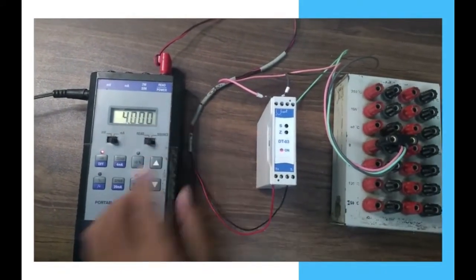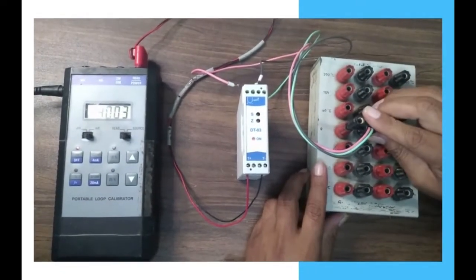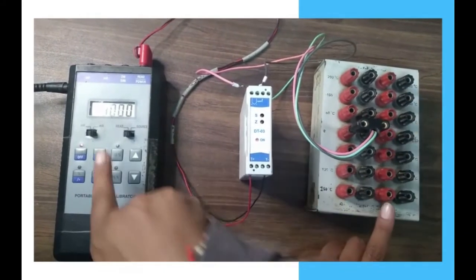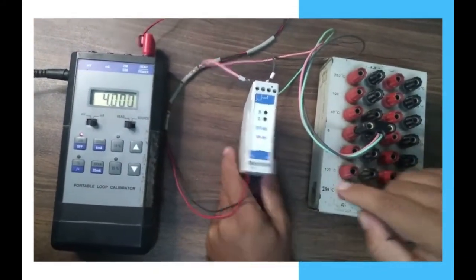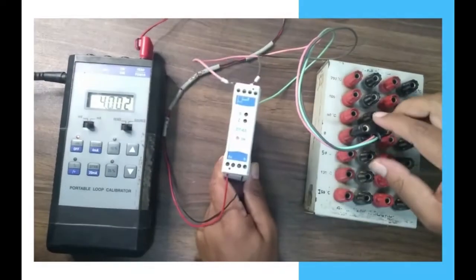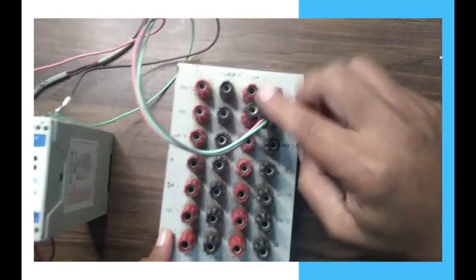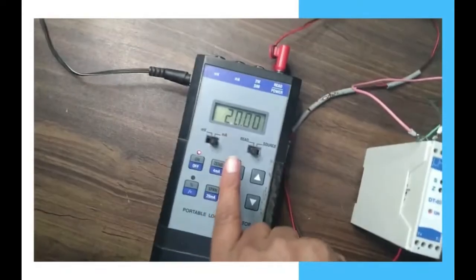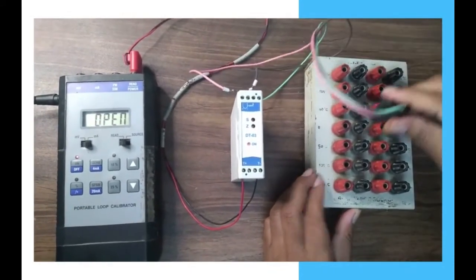Our temperature transmitter full range is 0 to 300 degrees Celsius. So when I apply zero at the resistance source, we will get 4 milliampere current in the calibrator. And when I apply 300 at the resistance source, we will get 20 milliampere current in the calibrator. This is how you can see the current changes according to the temperature.